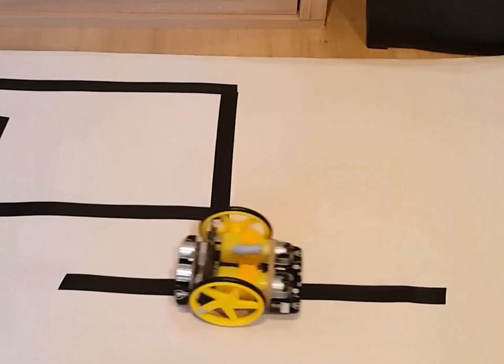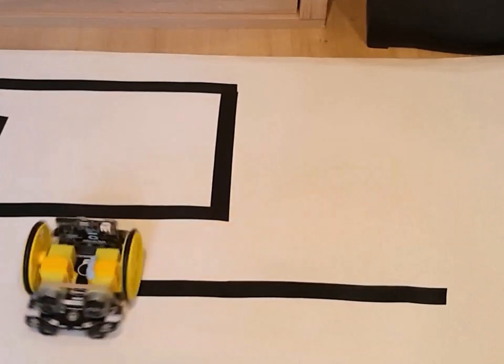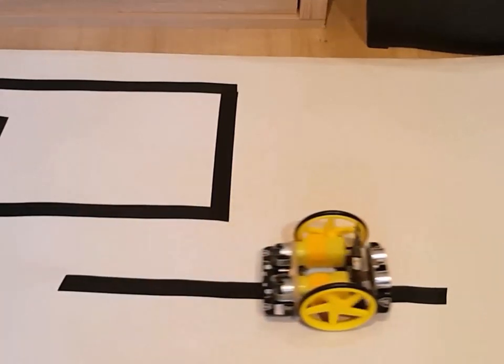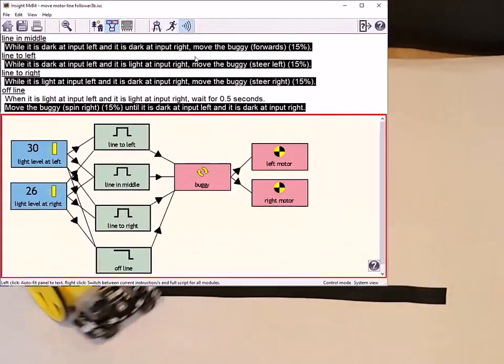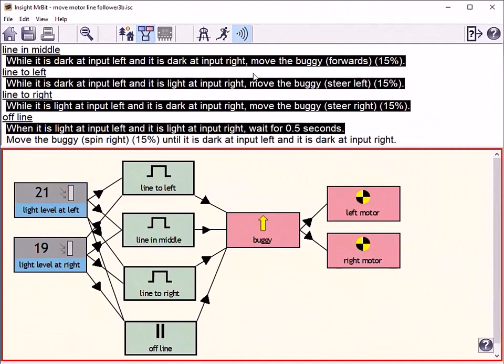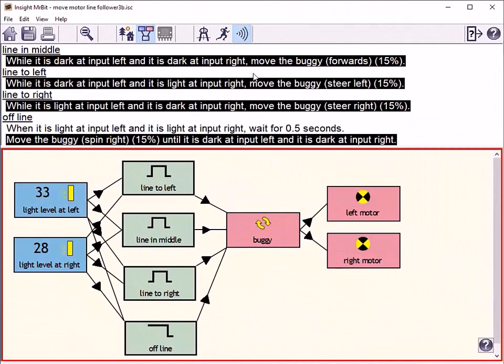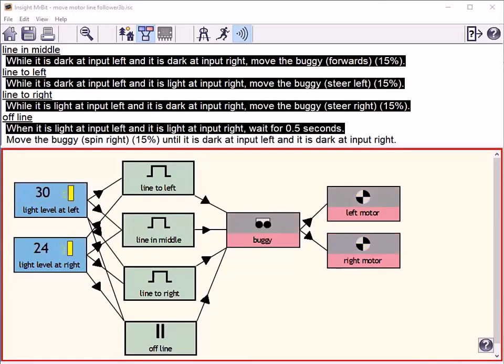Here's how the microbit can help you learn about controlling robots. This simple robot has two motors together with light sensors for detecting the brightness of the surface underneath. The program is designed to make the buggy follow the black line.